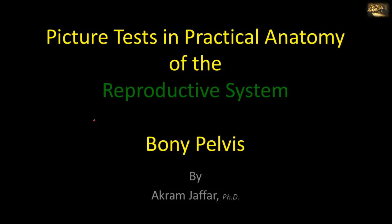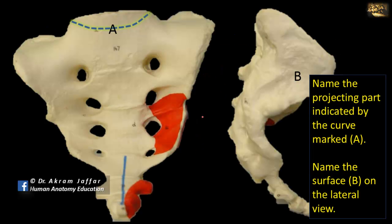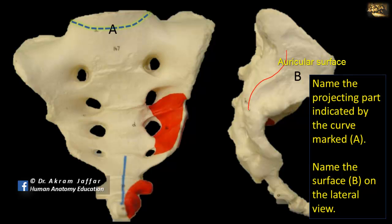Now I will deal with the bony pelvis. Name the projecting part indicated by the curve marked A. This is a sacrum and the first sacral segment; the prominent upper part of the first sacral segment is called the promontory of the sacrum — so this is the sacral promontory. Surface B on the lateral aspect is called the auricular surface, which is the surface where the sacrum articulates with the ilium at the sacroiliac joint.